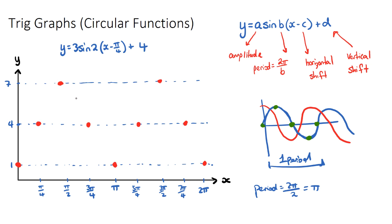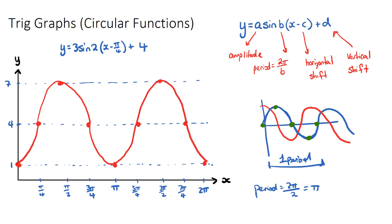Once I have all my dots it's quite easy to draw the circular function. Connect three dots with a frown face, then a smiley face, alternating — and that gives us our function: 3 sine of 2 times x minus pi on four, plus four. In IB questions they don't often ask you to sketch — they'll give the sketch and ask you to find a, b, c, and d — but if you can sketch it, you can do the reverse much more easily.